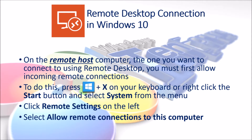On the remote host computer — the one you want to connect to using remote desktop — you must first allow incoming remote connections. To do this, press the Win key plus X on your keyboard, or right-click the start button and select System from the menu. Click Remote Settings on the left and select Allow remote connections to this computer.